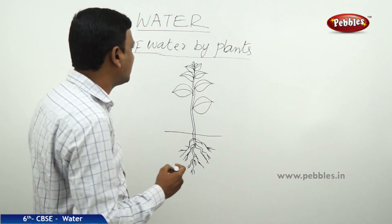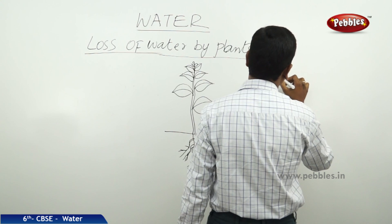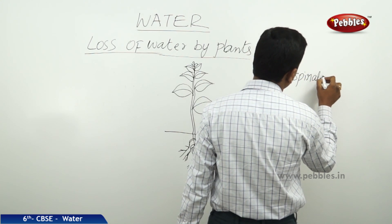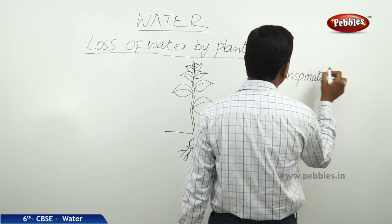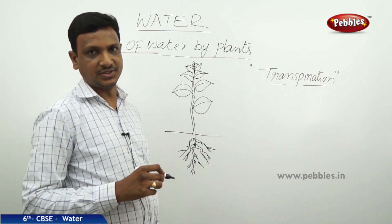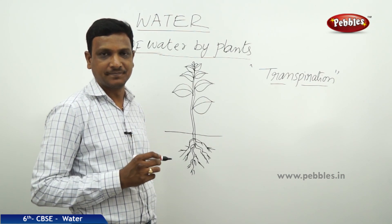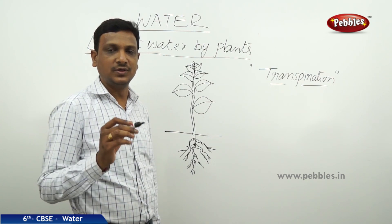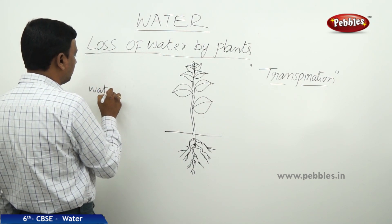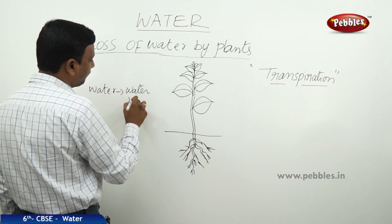That is transpiration. What is this transpiration? This process is achieved by plants and trees. Plants and trees convert the water to water vapour.